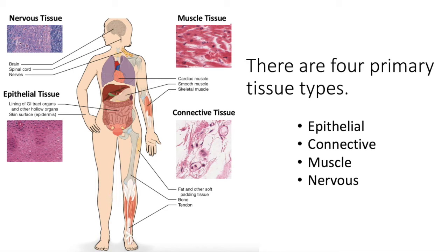All of our hollow organs are lined with epithelial tissue, so the lining of the stomach is epithelial tissue. Epithelial tissue provides a barrier between your body and some sort of environment — if it's your epidermis, it's the external environment; if it's the lining of your stomach, it's the acidic environment of your stomach. We're going to explore epithelial tissue first.